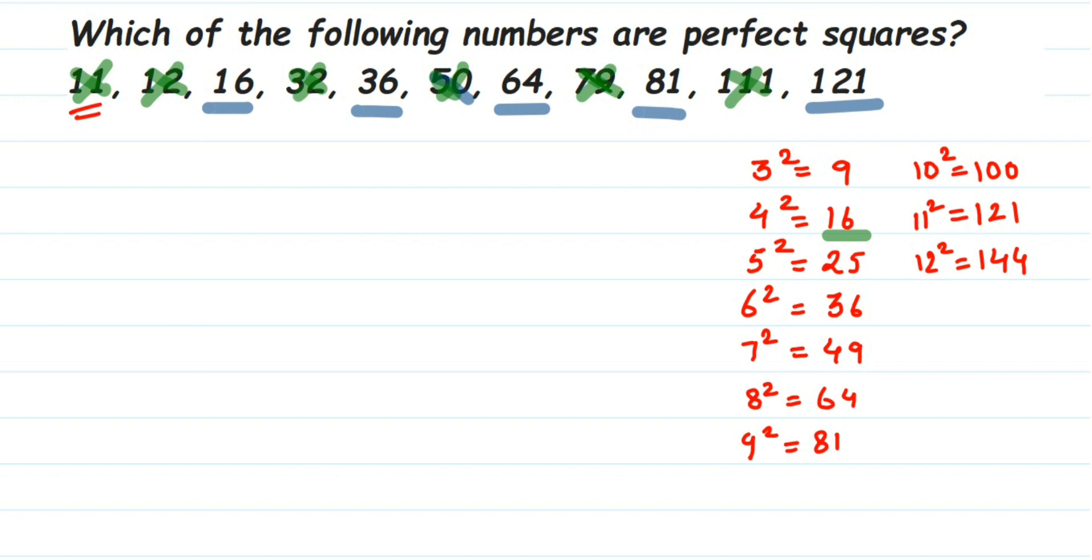Like that you can check if given small numbers. We know the multiples, we know the tables from 1 to 12 or 13, so it's easy for you to recognize if the numbers are perfect squares or not. I hope this question is clear. I'm just concluding the answer here: it is 16, 36, 64, 81, and 121 are perfect squares.